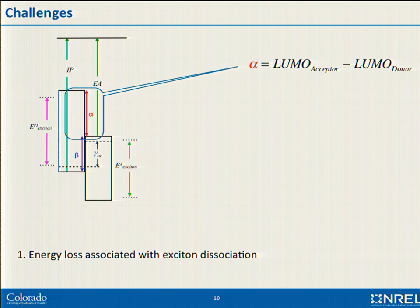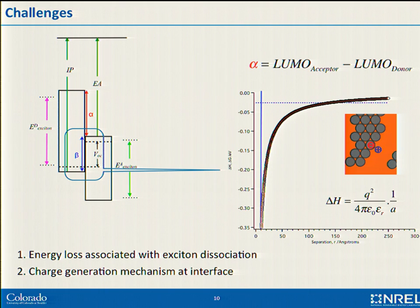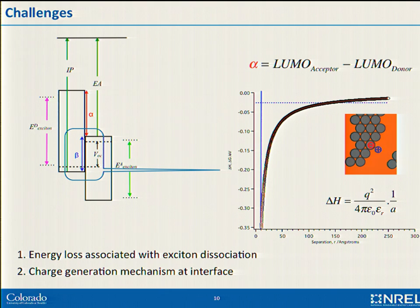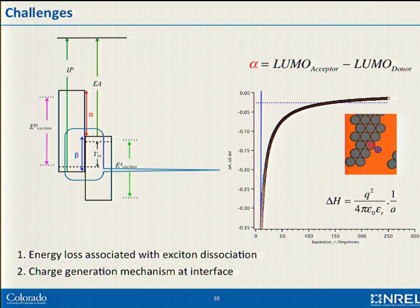We have a bound charge transfer state at the interface, where we have an electron and hole separated by a distance of the order of a nanometer. If you put them into this low dielectric medium — remember that's the key difference — what you find is the electron and hole at one nanometer separation are bound by a very large amount of energy: 300 to 350 millivolts. So how does something bound by 350 millivolts in a low dielectric medium move away from each other with such efficiency? Clearly something important is going on.